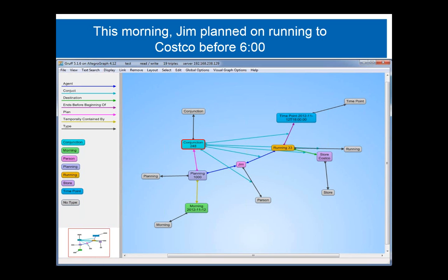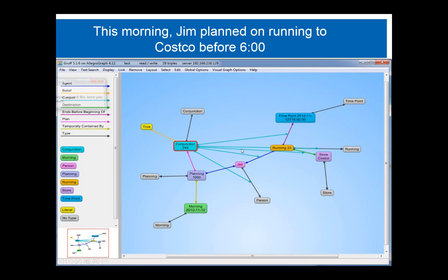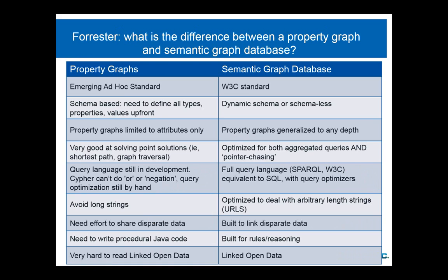This person is working for a company that does natural language analysis. One thing that happens a lot is you analyze stories in newspapers and might find many statements about the same person. What you'd really like to do is keep all the inferences about a particular sentence and tie them together. For example, the sentence 'Gene plans on running to Costco before 6 o'clock' gets turned into a whole subgraph, tied together by a conjunction object that links to all these different statements and says this statement might be true.